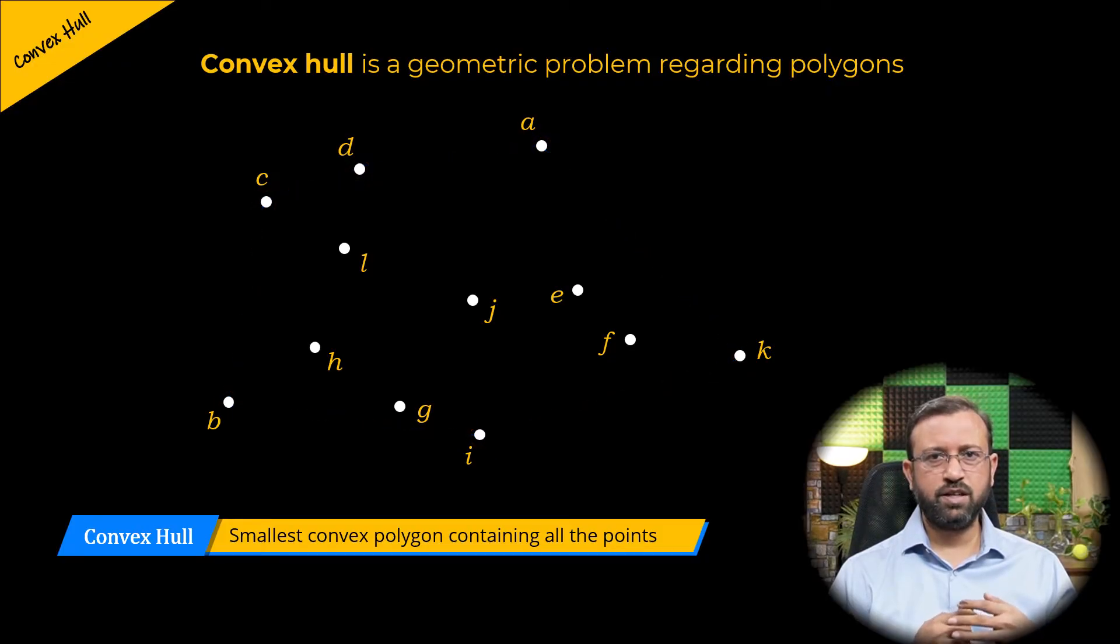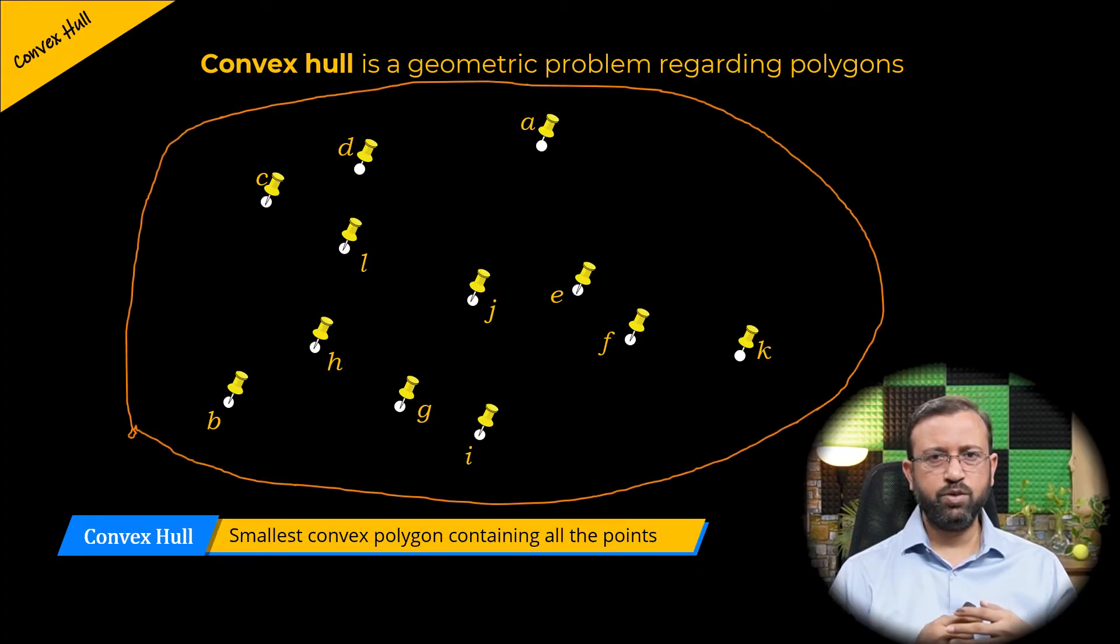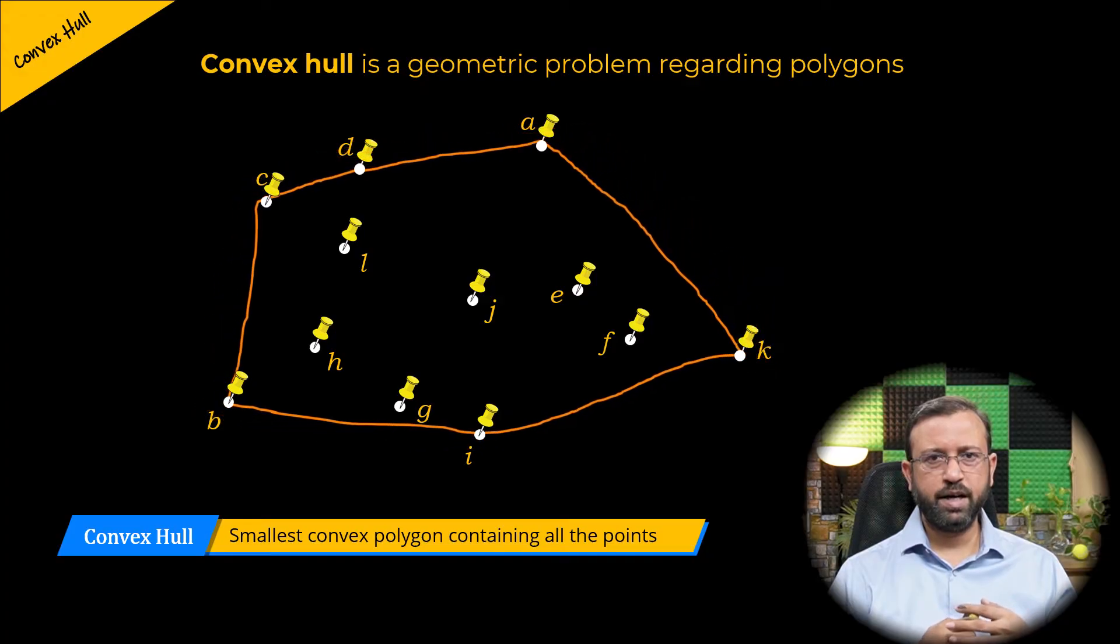Just think of the convex hull as if we have pins on the board at every point in the plane and if we use a rubber band or tie a thread starting from the extreme pin covering all the outer pins and ending up at the starting pin, then the polygon created is a convex hull.